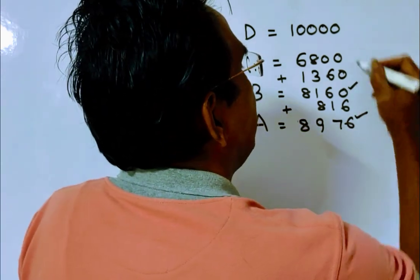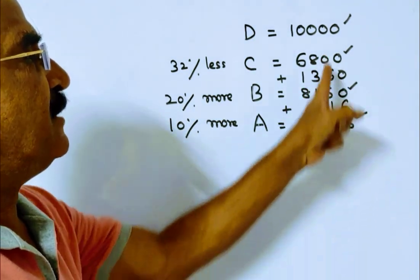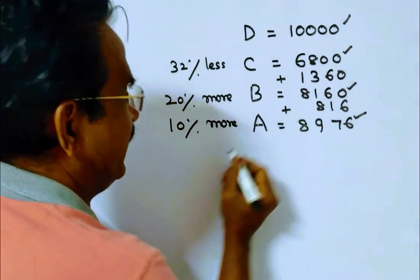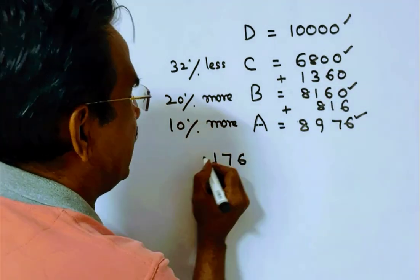These are the marks obtained by A, B, C, D. Now, the difference between A and C. Difference between A and C is 8,976 minus 6,800: 9 minus 8 is 1, 8 minus 6 is 2. So 2,176.